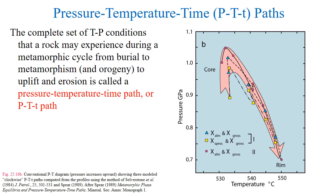The complete set of temperature-pressure conditions that a rock may experience during a metamorphic cycle from burial to metamorphism and orogeny to uplift and erosion is called the pressure-temperature-time path, or simply the P-T-t path.